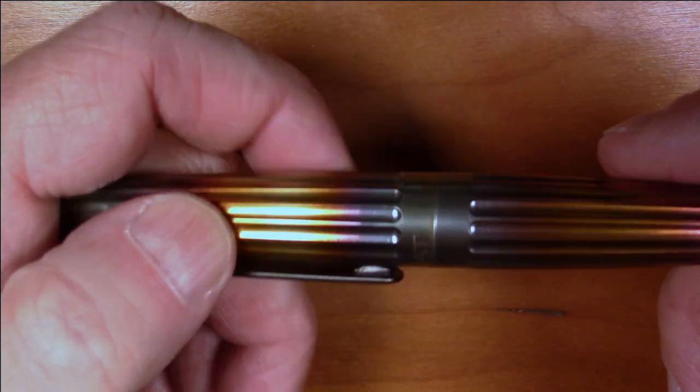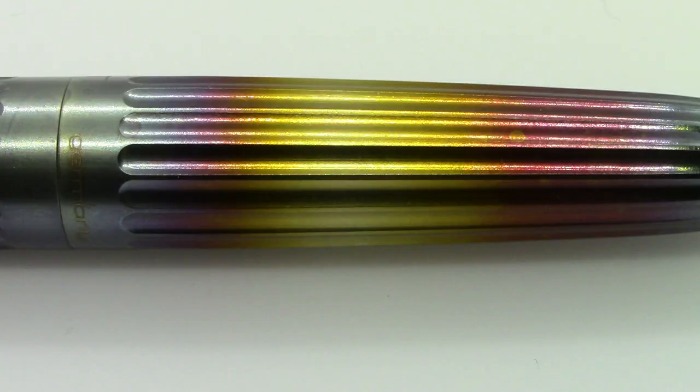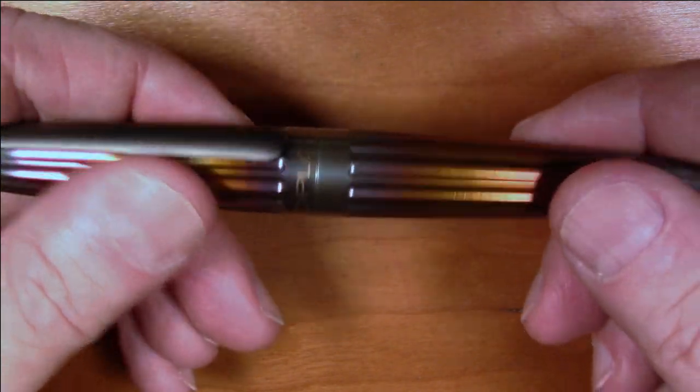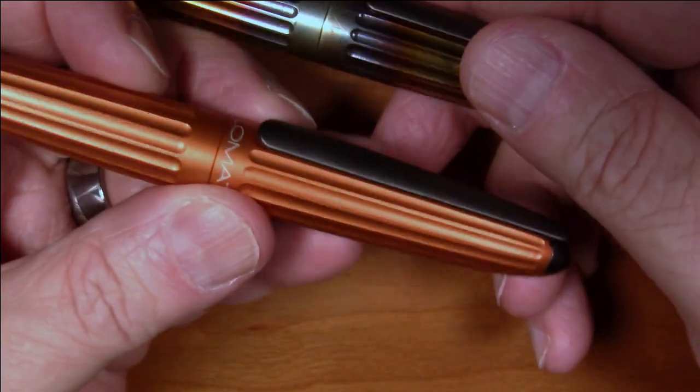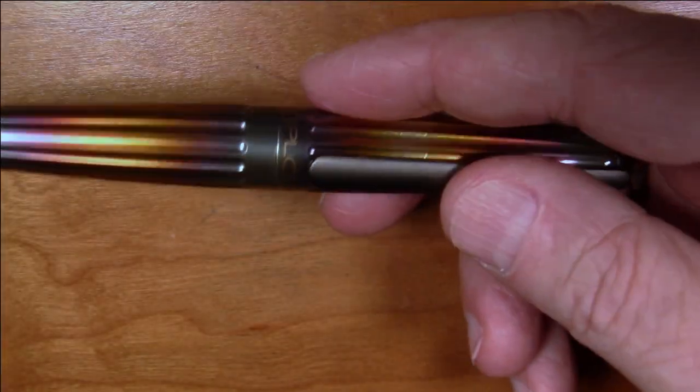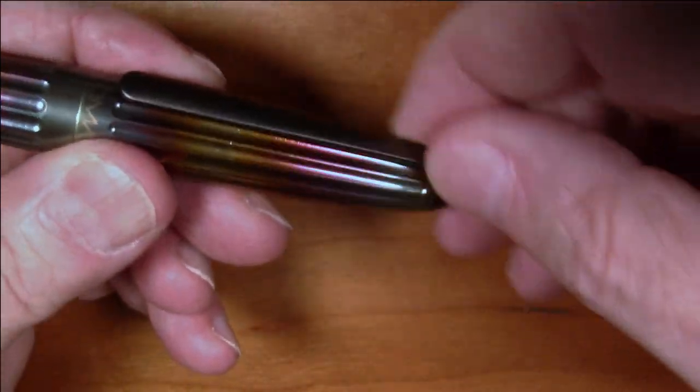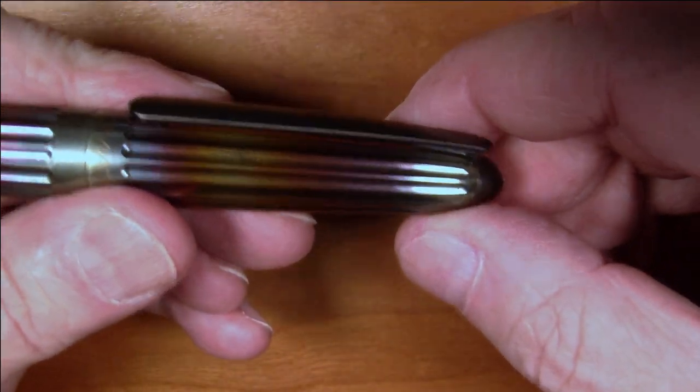The body has this flamed effect and has these very very deep ridges that just look great. I personally think they look great on the aluminum version, even better in this steel flame version. It has the identical clip, the same aluminum clip as the aluminum Aero. Maybe would have been nice if they could have done something special for this version, but it is the exact same clip. It's fairly standard, very functional.